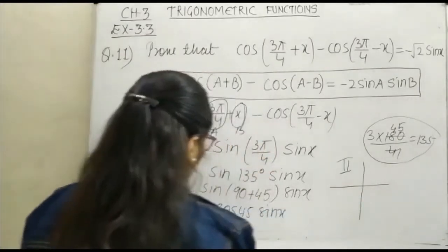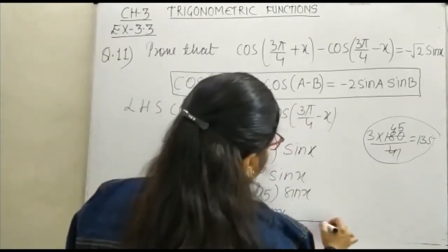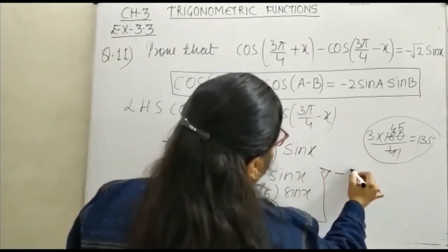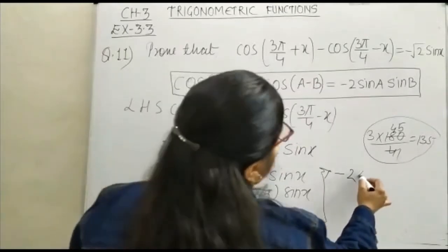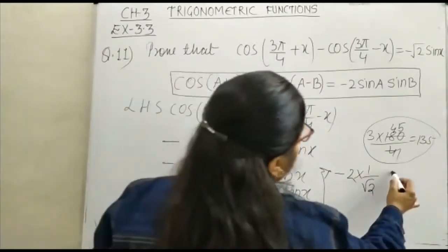Moving on, we can see here, this is minus 2, minus 2 cos 45 is 1 by √2 and sin x.